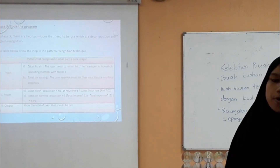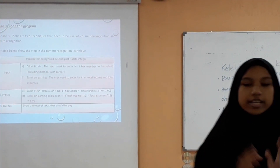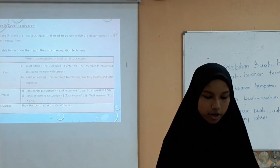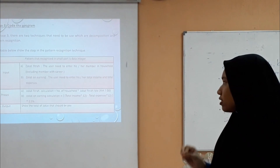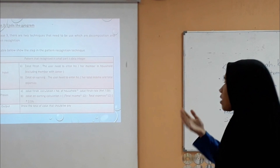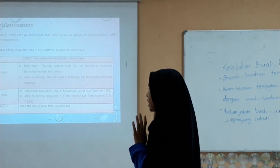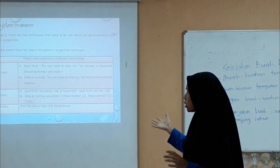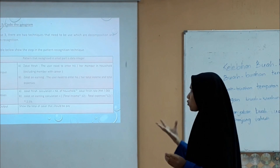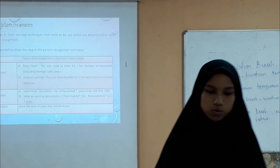Phase 3: implement the programs. In phase 3 there are two techniques used: decomposition and pattern recognition. Since decomposition was already explained, I will focus on pattern recognition. The table shows the steps in the pattern recognition technique. The inputs are zakat fitrah and zakat on earning. The process is the calculation of these two zakat types. The output is the zakat amount to be paid.